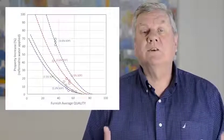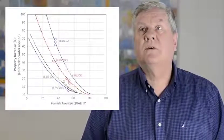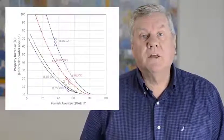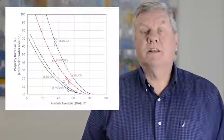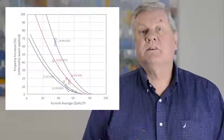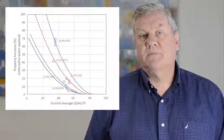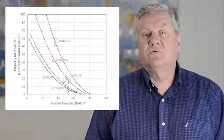Here's a plot that shows the relationship between bond strength or paper quality, if you like, and the starch addition that you're making, and what you might expect in terms of percentage increase in paper properties. And you can see that it's really non-linear.